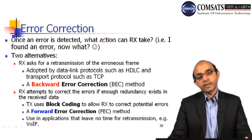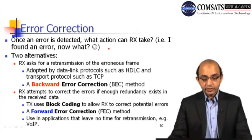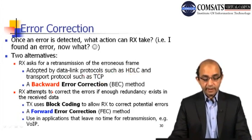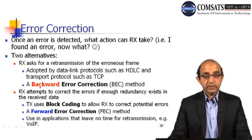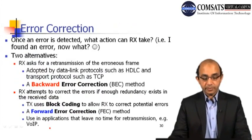After error detection, we need an error correction mechanism. There are two alternatives: first, ARQ — automatic repeat request — which asks for retransmission of the erroneous frame, used in data link protocols like HDLC and transport protocols like TCP. This is backward error correction (BEC). The second alternative is forward error correction (FEC), where the transmitter adds enough redundancy so the receiver can correct errors without retransmission. FEC is used in applications such as Voice over IP.